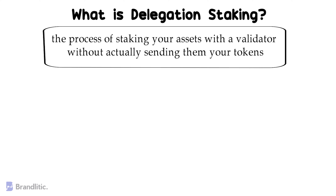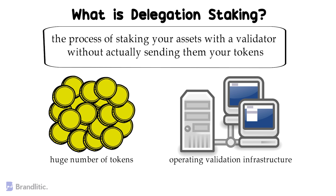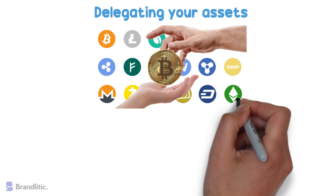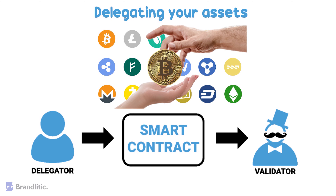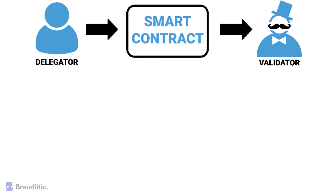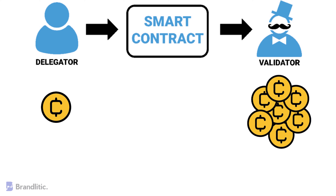Let's understand what delegation staking is. Simply put, the process of staking your assets with a validator without actually sending them your tokens is commonly called delegation. This method is quite feasible for an individual crypto holder, as not everyone can afford owning a huge number of tokens of a single currency or operating validation infrastructure. Delegating your assets means letting them count towards the stake of a validator in return for a share of the reward received. In practice, a delegator deposits tokens in a smart contract specifying the validator whose influence they want to increase. As a result, the rewards are automatically split between the validator and the delegator, usually by applying a simple commission rate.